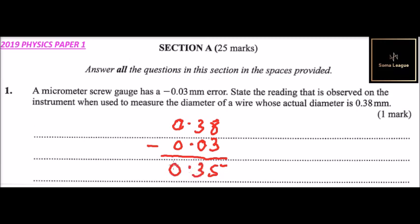0.35, which means it has an error of -0.03. So that's how you are supposed to answer that question.